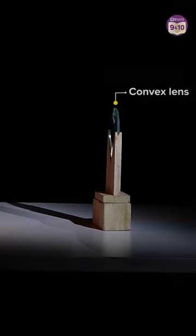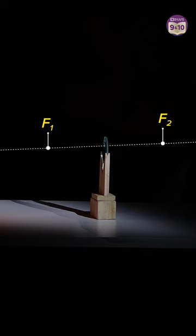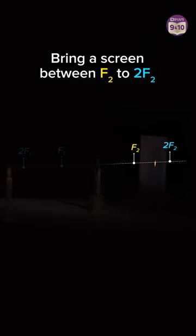Here's a convex lens. There is focus on each side of the lens, and at twice the focal length, there is 2f on each side. Bring a screen between f2 and 2f2.